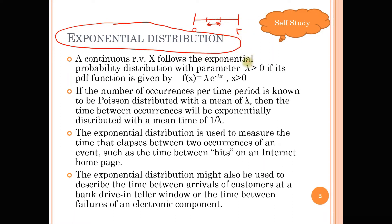Normally, if you want to know when to apply the exponential distribution, most of the time it's going to be applied for cases where you are evaluating the waiting time between two events — more precisely, the two Poisson events.